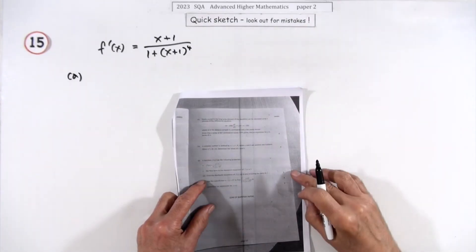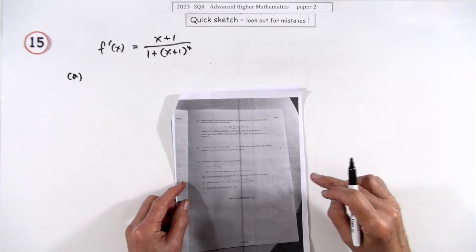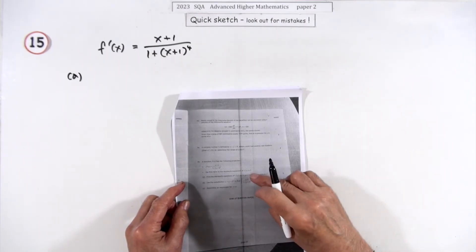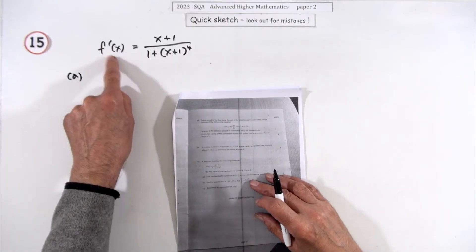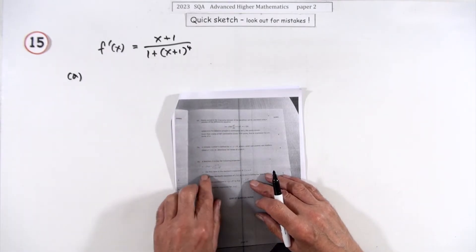So number 15, the last question in paper 2 of the 2023 Advanced Higher, we've got eight marks here. It's a McLaurin's expansion one. You've got the first derivative of this function here.